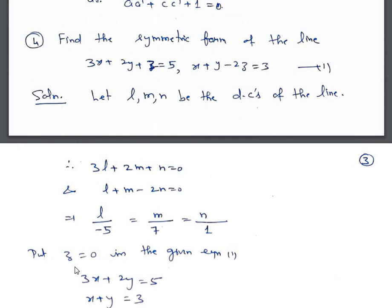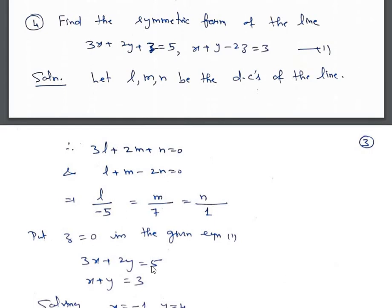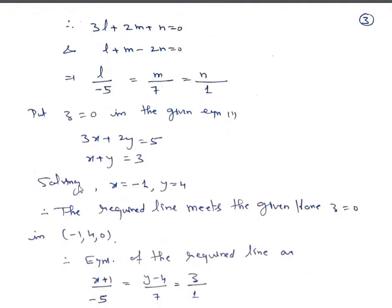To find a point on the line, put z equals 0. When z equals 0, we get 3x plus 2y equals 5 and x plus y equals 3. Solving simultaneously gives x equals minus 1 and y equals 4. So the line meets the plane z equals 0 at (minus 1, 4, 0). Therefore the required line is: x plus 1 upon minus 5 equals y minus 4 upon 7 equals z upon 1.